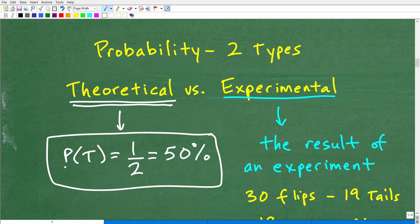So, again, the probability of this fair coin being a tail, we have a one out of two outcomes, right? So that's 50%. That's theoretical. We would expect 50%.